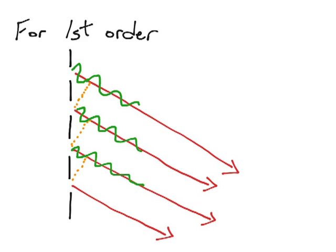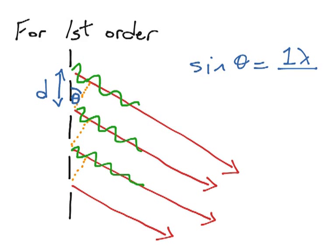Looking at the triangle, we label the angle theta. The distance the green waves span represents a one-lambda path difference from one slit to the next. Applying sine as opposite over hypotenuse: the hypotenuse is the grating constant D, which is the distance from one slit to the next, and the opposite side is one lambda. So sine theta equals one lambda over D.